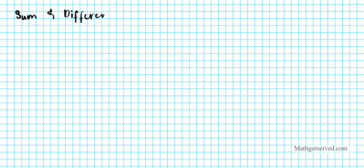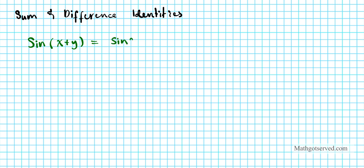Alright, so sum and difference identities. Let's do the sine one first. Sine of x plus y is given by: sine x cosine y plus sine y cosine x.